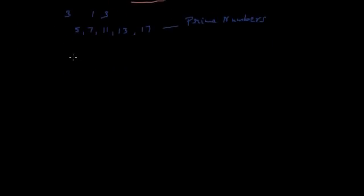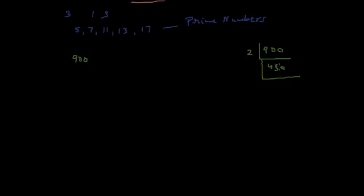Let's look at one example. Let's take the positive integer 900 and express it as a product of prime factors. If we divide 900 by 2, we get 450. Factorizing further, we get 225. Dividing 225 by 3, we get 75.